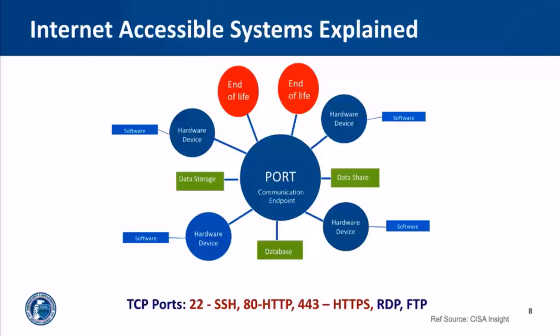Many attacks target these three ports because they are public-facing and an attractive target for gaining access to a network. Also closely behind these popular targets are RDP and FTP ports. Once you've identified the public-facing ports, you should identify what IAS systems are connected to those ports — typically hardware devices and the software systems on those devices. Be aware of end-of-life systems that can be high risk because most vulnerabilities are related to unsupported operating systems that can't receive patches or security upgrades. It's also important to pay attention to data storage and shared databases, and to map out your full attack surface.